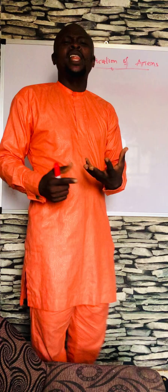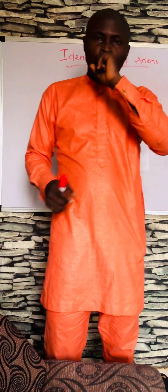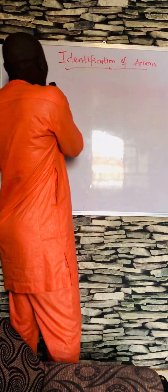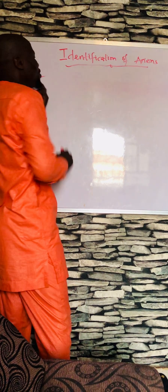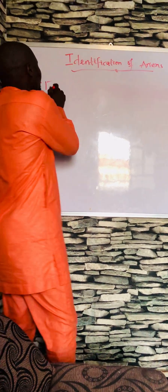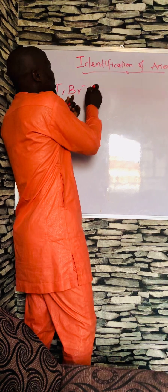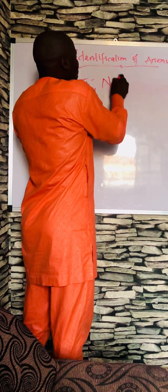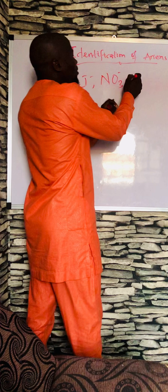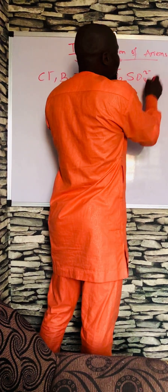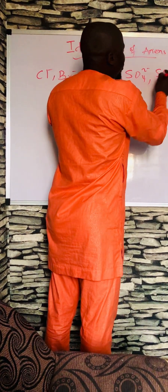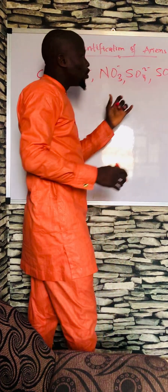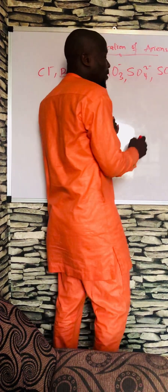So today is more or less an introduction. The objective is how to identify anions such as chloride ions, bromide ions, iodide ions, trioxonitrate(V) ions, tetraoxosulfate(VI) ions, trioxosulfate(IV) ions, and so on and so forth.